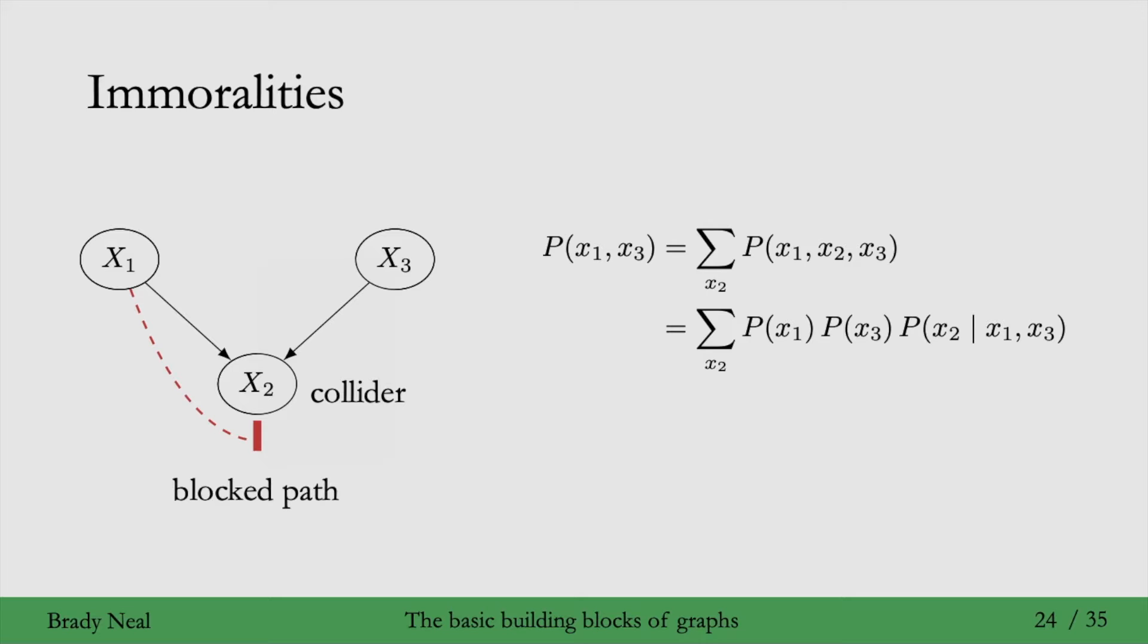So, the root nodes in the graph, that's the nodes that don't have any parents. x1 and x3 show up in their own factors without anything conditioning them. And then we have a P of x2 given x1 comma x3 because x1 and x3 are x2's parents.